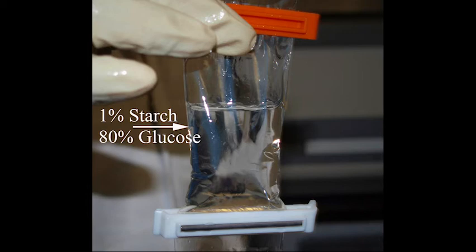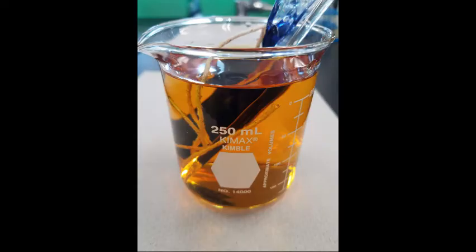Rinse the bag with running tap water to remove any starch or glucose that may have been on the outside. Carefully submerge the bag into the beaker of iodine solution. The solution in the beaker should remain golden brown after the dialysis bag has been submerged.